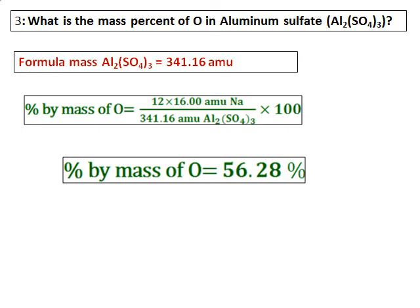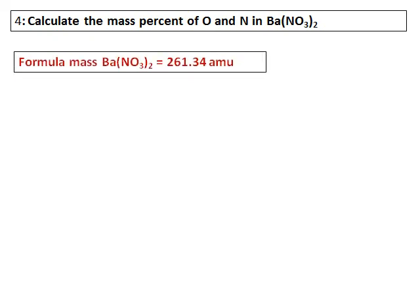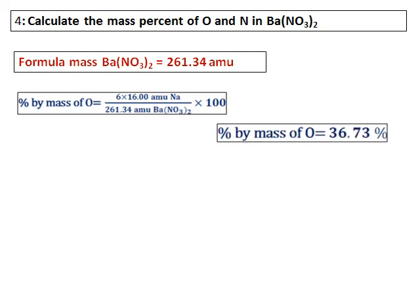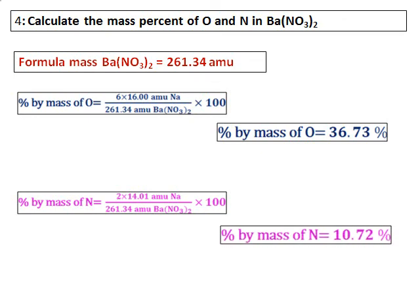Be careful with counting atoms, then put in the values and calculate the percent by mass of oxygen. Next, calculate the mass percent of oxygen and nitrogen in barium nitrate. The formula mass of barium nitrate is calculated, then the number of oxygen atoms is 2 times 3, which is 6, and the number of nitrogen atoms is 2. Substitute the values to get the mass percent of oxygen and nitrogen.